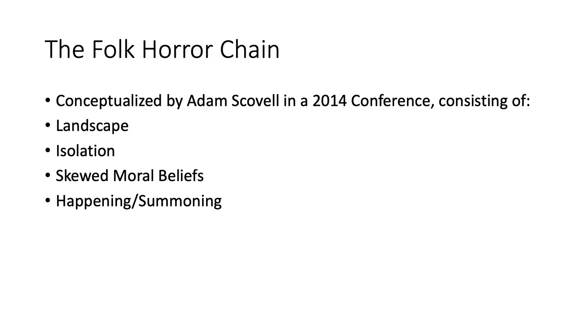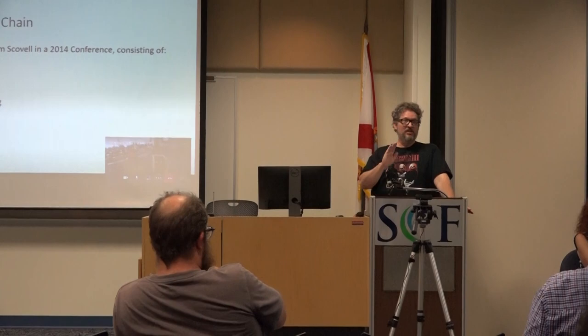The probably most important element is the happening or summoning — this usually occurs at the end of the text, involving the summoning of some kind of demonic being, maybe a pagan god, or perhaps a ritual sacrifice. I think landscape is really the essential ingredient and one of the ways folk horror distinguishes itself from cosmic horror. For the rest of my time, I want to break down a text I think a lot of you are familiar with.